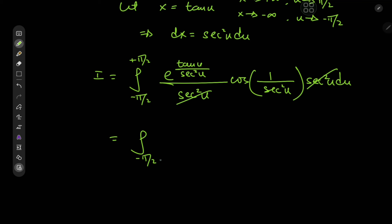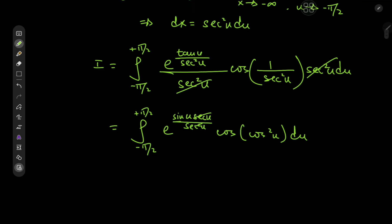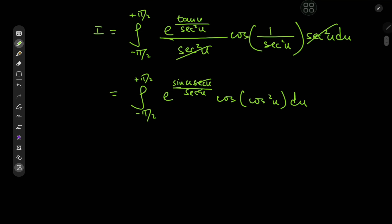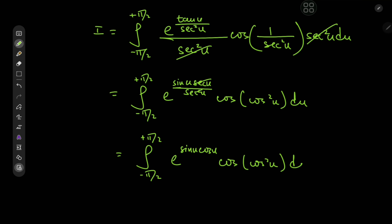That means we have the integral from negative π/2 to positive π/2 of e to the tangent, which equals sine u times secant u, divided by secant squared u — again, some nice cancellation — times the cosine of cosine squared u. And sine divided by secant is the same as sine times cosine. So we have the integral from negative π/2 to π/2 of e to the sine u times cosine u times the cosine of cosine squared u du.